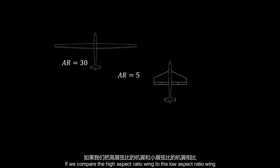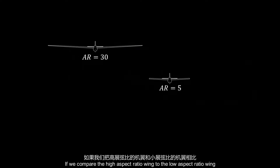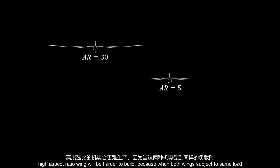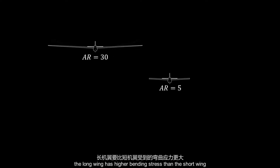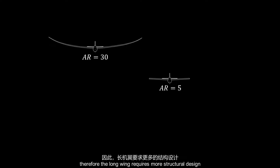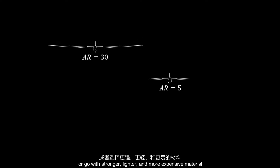If we compare the high aspect ratio wing to the low aspect ratio wing, the high aspect ratio wing will be harder to build. Because when both wings are subject to the same load, the long wing has higher bending stress than the short wing. Therefore, the long wing requires more structural design, or the use of stronger, lighter, and more expensive materials.